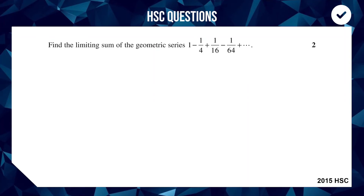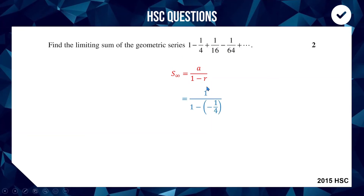For the second part, finding the limiting sum of the geometric series, we use the formula from the formula sheet. Clearly a = 1. To go from 1 to −1/4 we multiply by −1/4, so r = −1/4. Substituting: S = 1 ÷ (1 − (−1/4)) = 1 ÷ (5/4) = 4/5.